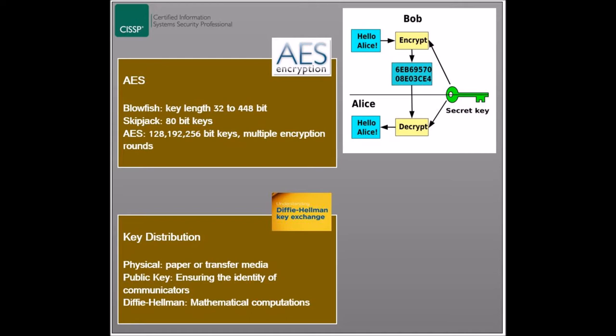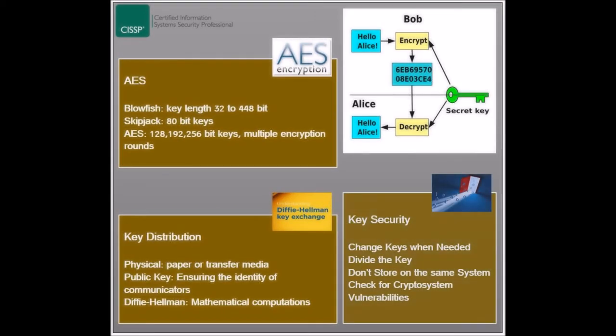The first method is simply exchanging the keys physically or offline, in the form of a paper or storage media which contain the key. The second method is using public key encryption, which allows the communicating entities to confirm their identities over unsecure media. The third method is by using the Diffie-Hellman algorithm, which involves a series of mathematical procedures that would result in both entities having the same key.